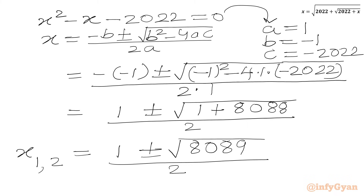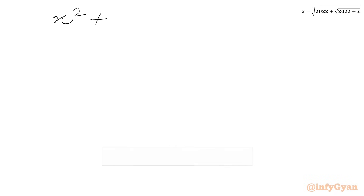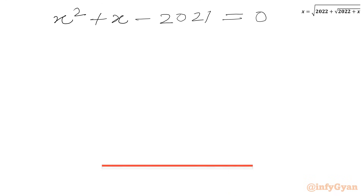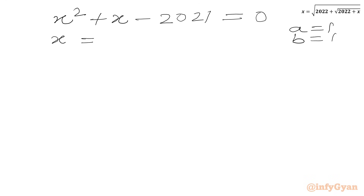Now we will solve our second equation: X squared plus X minus 2021 equals 0.